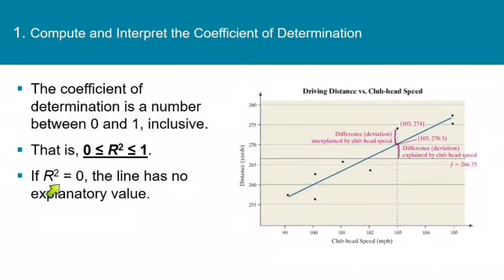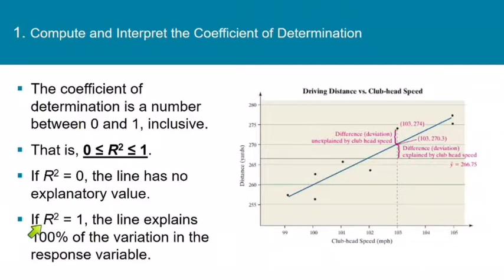If r squared is 0, then the regression equation has no ability to predict the y value with any accuracy at all. However, if r squared equals 1, then the regression equation explains 100% of the change in the response variable. In other words, if r squared is 1, then the regression equation does a perfect job of predicting the y values.